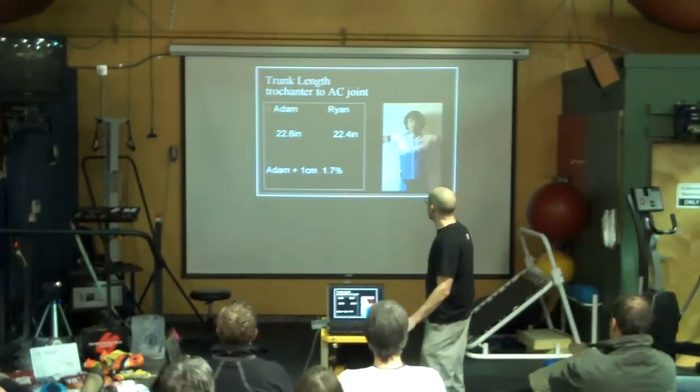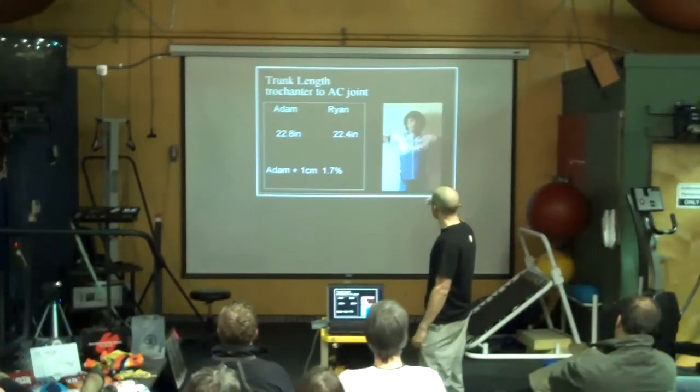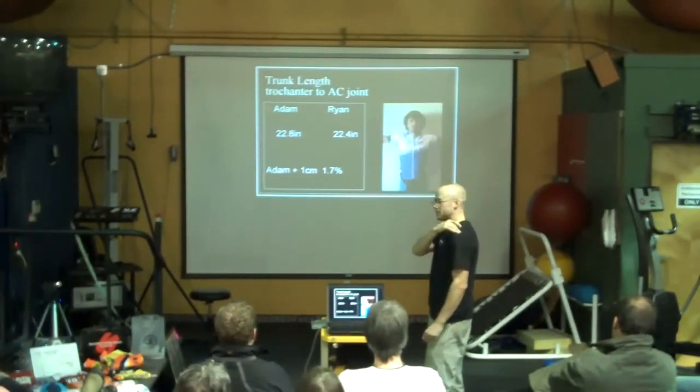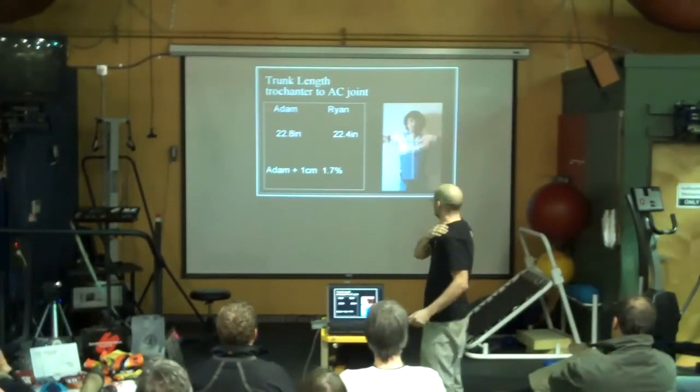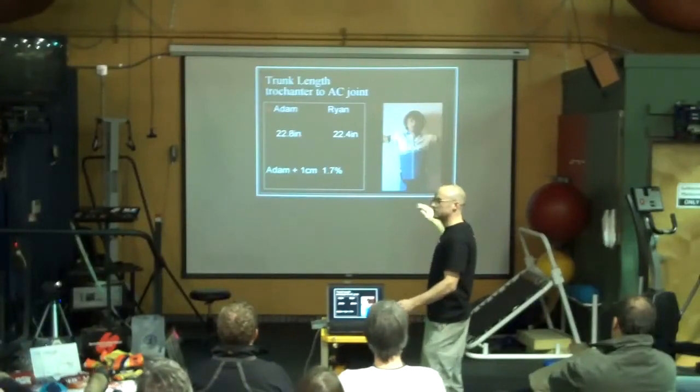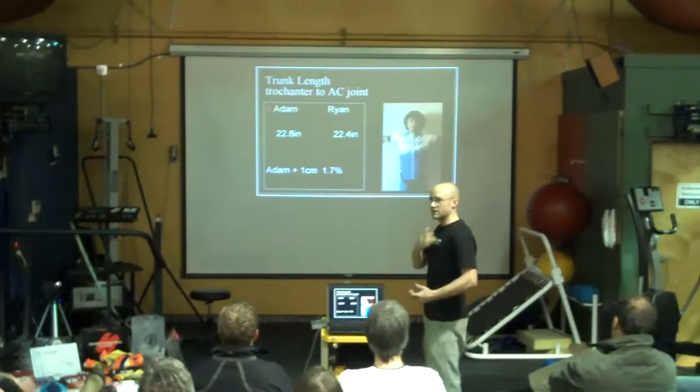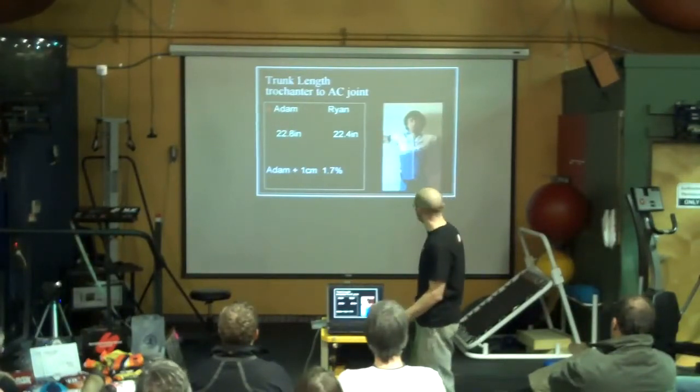I measured both these guys, just the trunk length from the AC joints on the shoulder down to their trochanter. Kind of an arbitrary measurement, but it's interesting. Seven inch difference of height, but Adam actually has a little bit of height difference in his torso that Ryan doesn't have.